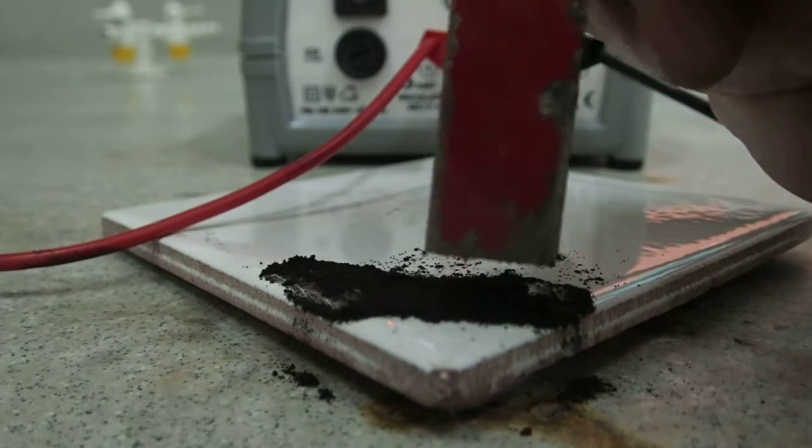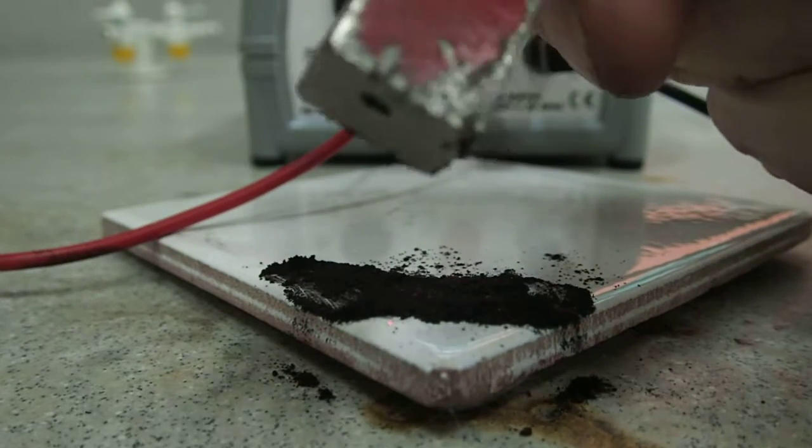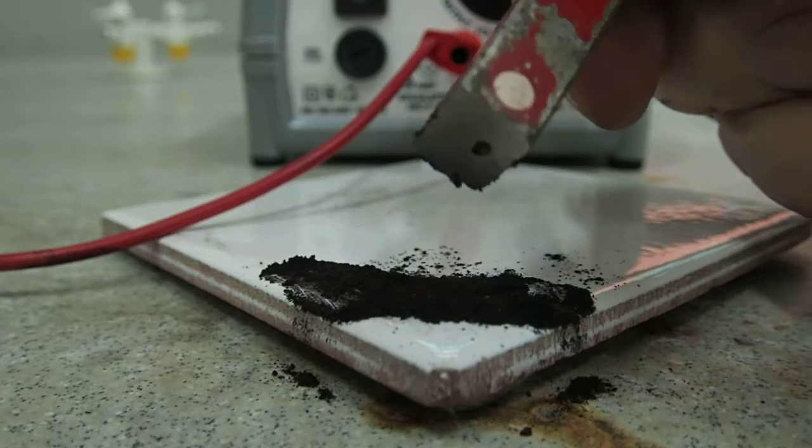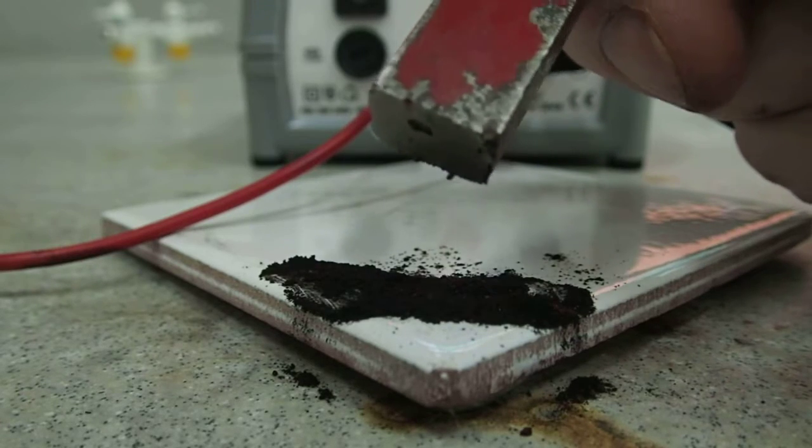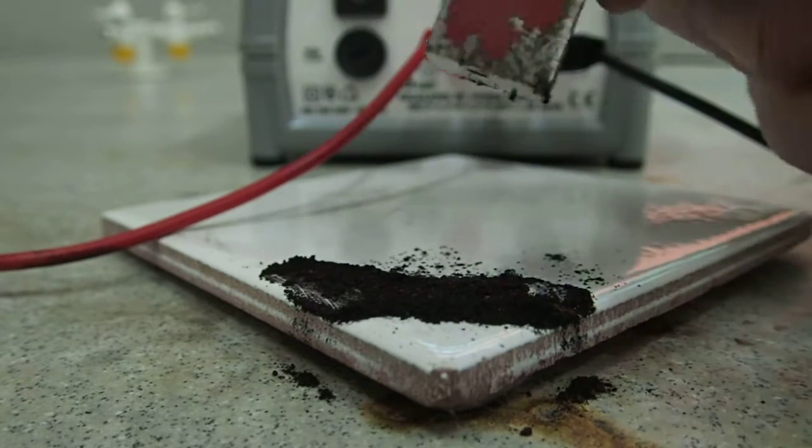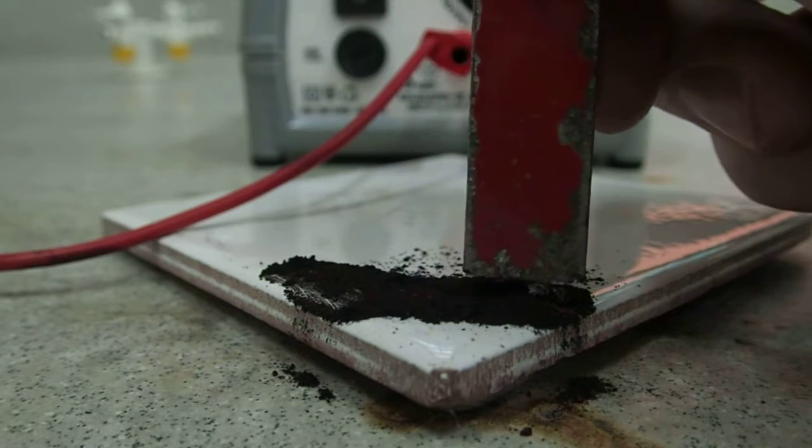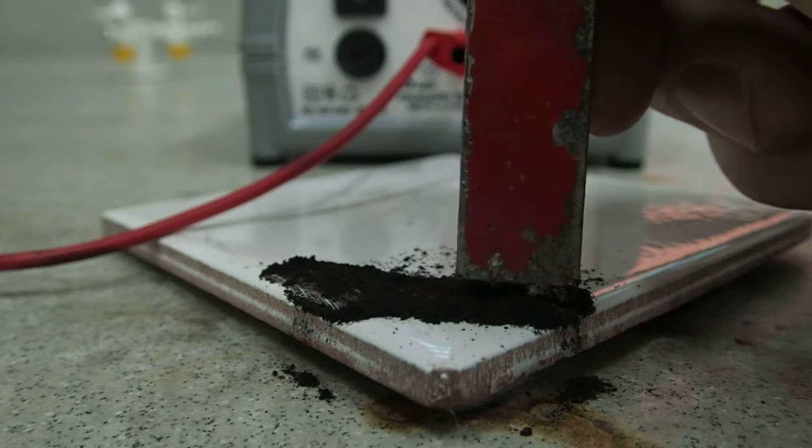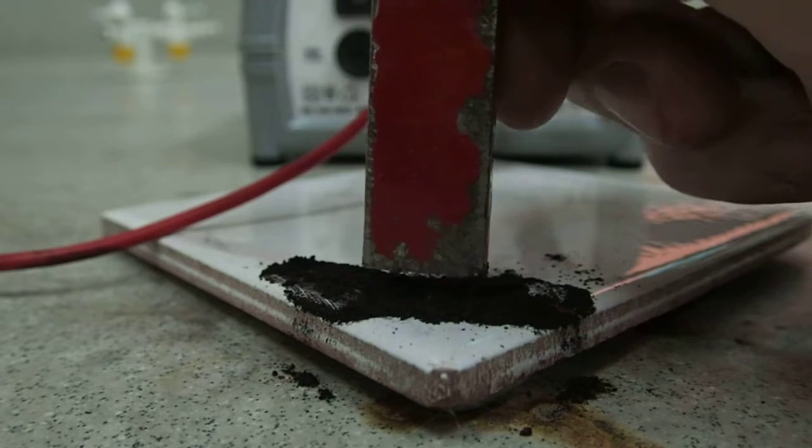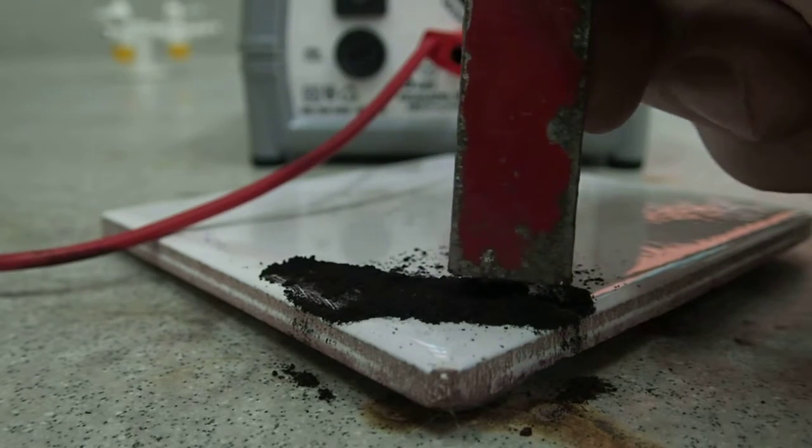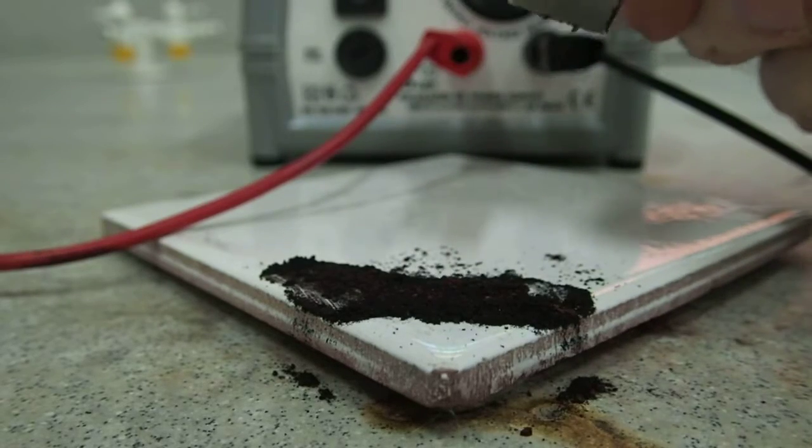There they are, attached to the bottom of the magnet. Can you pick those up? Those are tiny little iron filings that weren't there before. So there we are, the extraction of iron from iron oxide in less than five minutes.